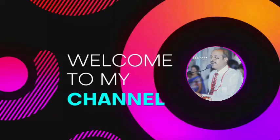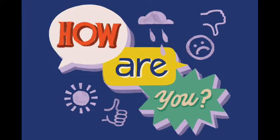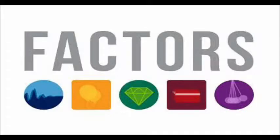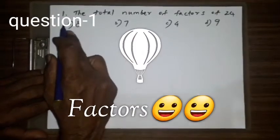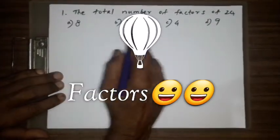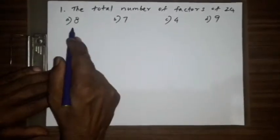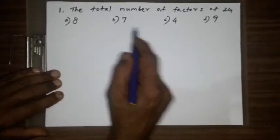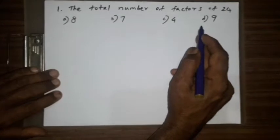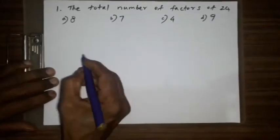Hello students, welcome to my YouTube channel. How are you? Hope you all are fine. Today we're going to see factors. Question number one: the total number of factors of 24 is A) 8, B) 7, C) 4, D) 9.